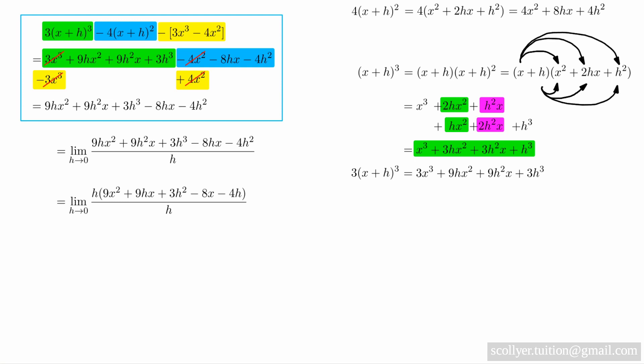Now we factor out h from each term in the numerator and cancel to leave us this expression, which we reorder into the limit as h tends to 0 of 9x squared minus 8x plus h into 9x plus 3h minus 4.